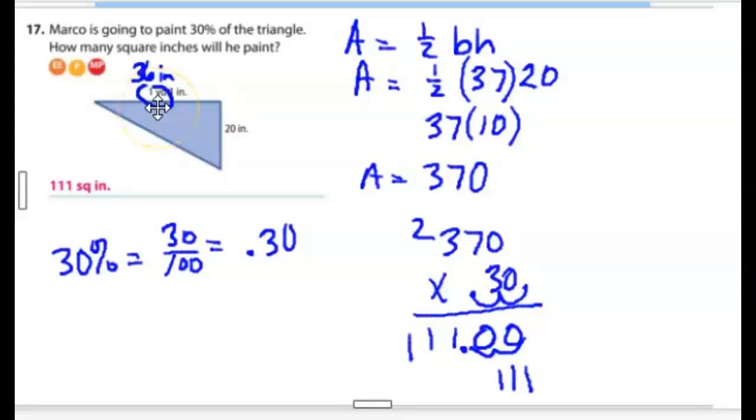So we're going to look in the back of our books at the reference chart. We'll find out that there are 3 feet in a yard and that there are 12 inches in a foot. So 3 times 12 is 36. Plus 1 inch is 37. That's where I got the 37. And then 20 is the height. So one-half of 20 is 10. 37 times 10 is 370.